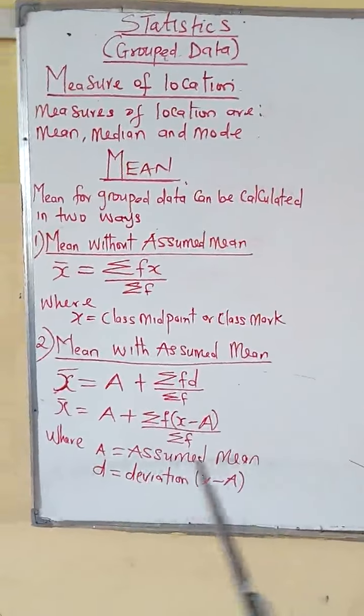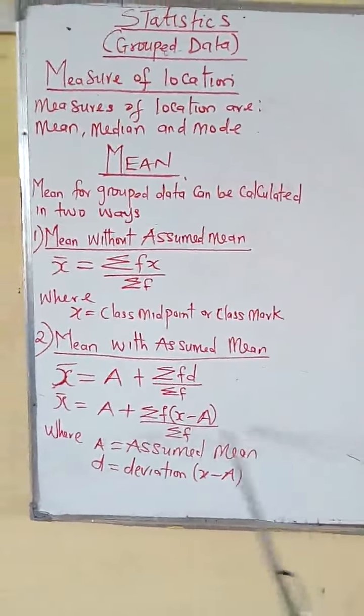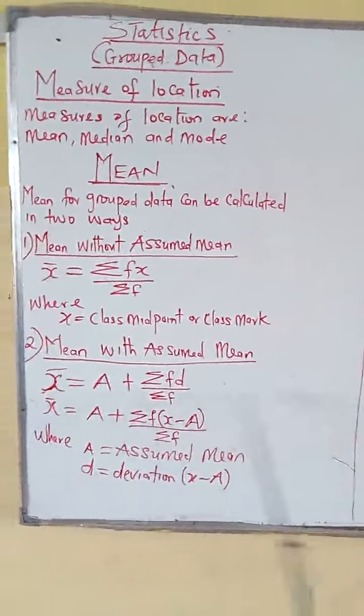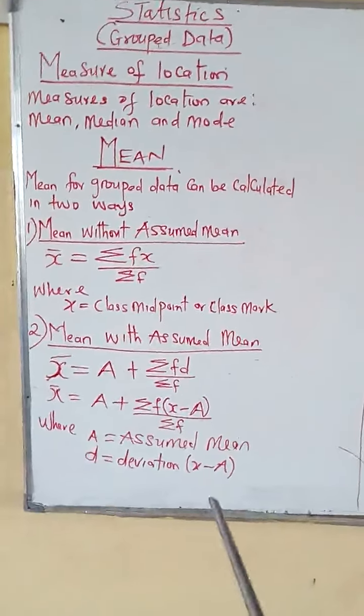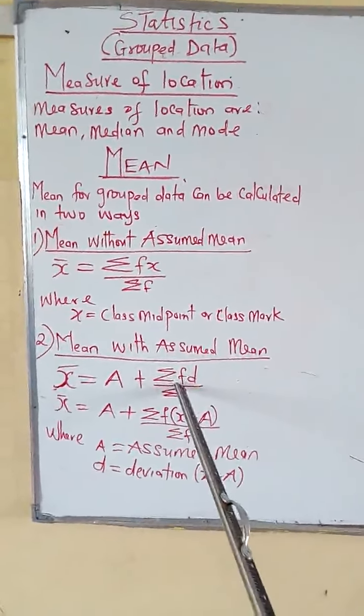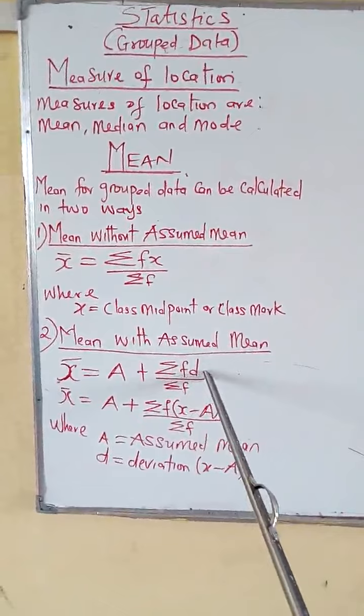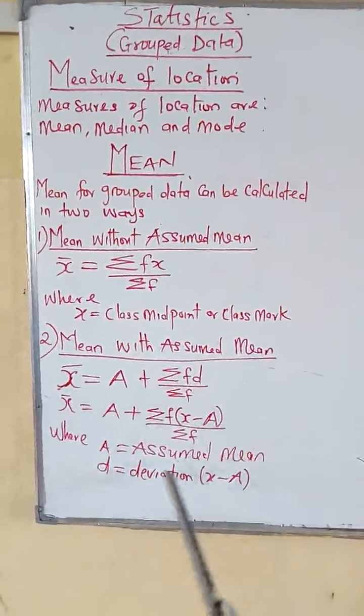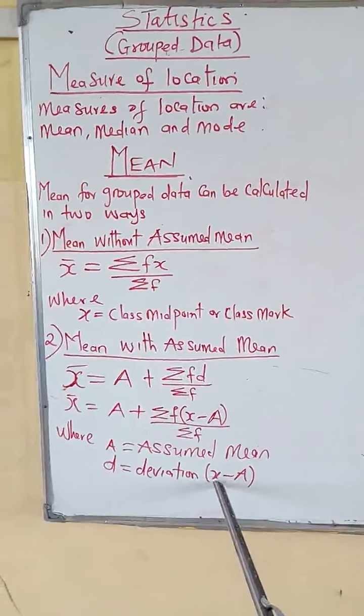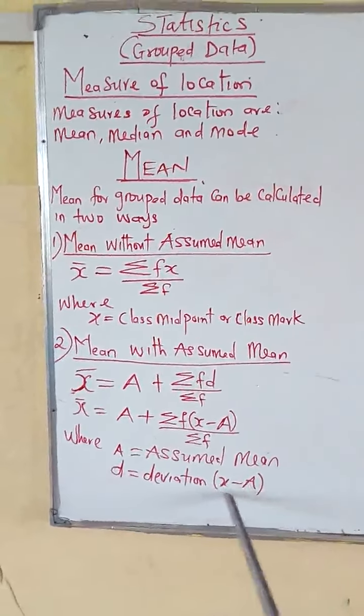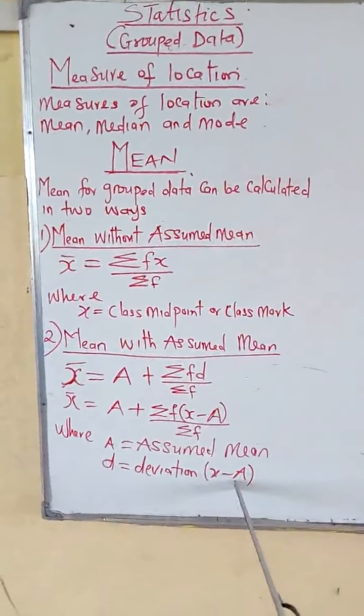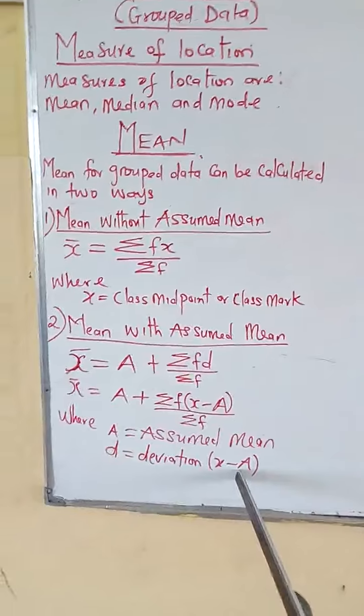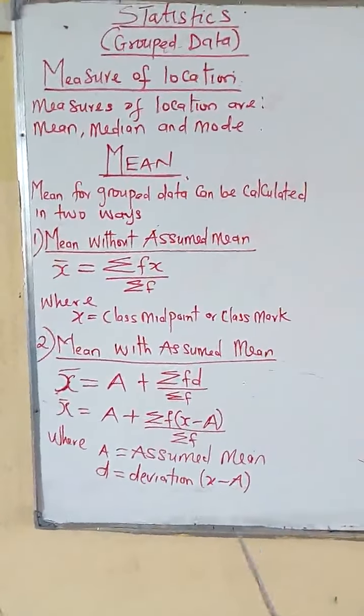F is your frequency. Your d is your deviation, which is given as X minus A. Your X are the values given to you in the question, while A is the assumed mean, given or not given.